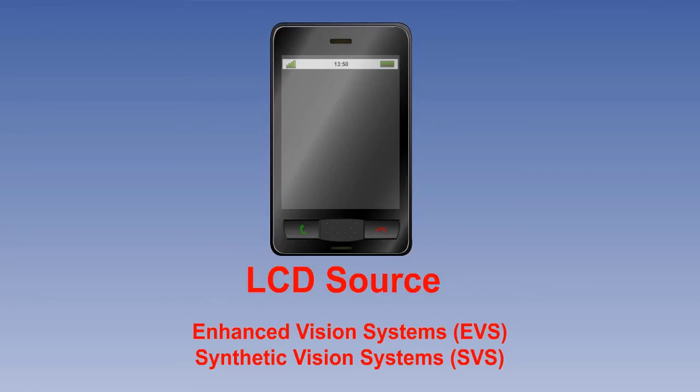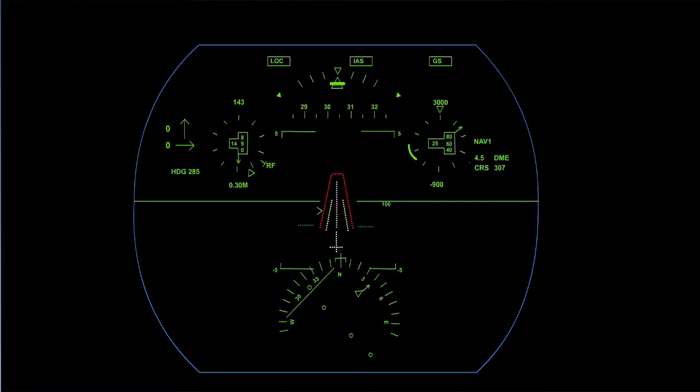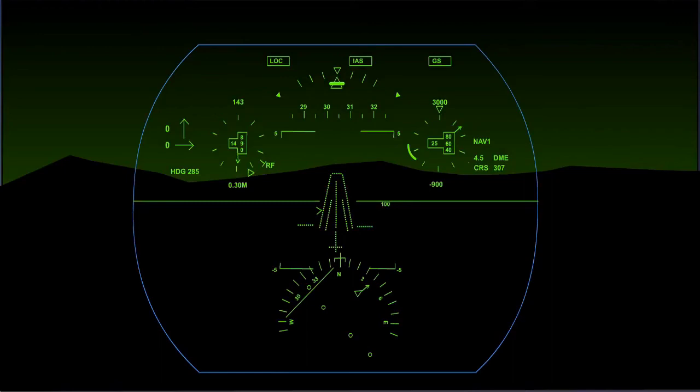In EVS, nose-mounted, forward-looking, infrared sensors detect approach and runway lights, which give out more heat than the background during low-visibility approaches. At night, it builds up a heat picture of the entire forward view. This is a picture with the EVS switched off. Look at the runway and now compare it with the same view a second later with the EVS on again.